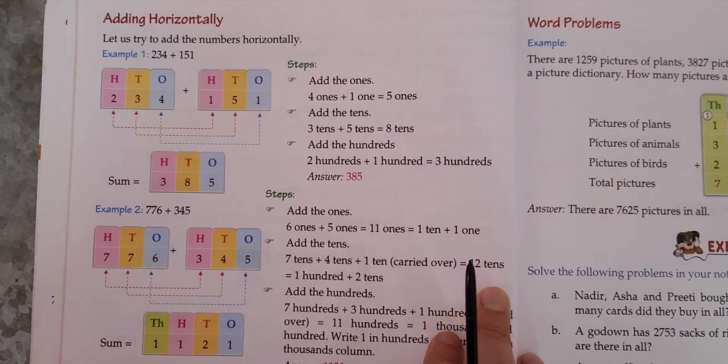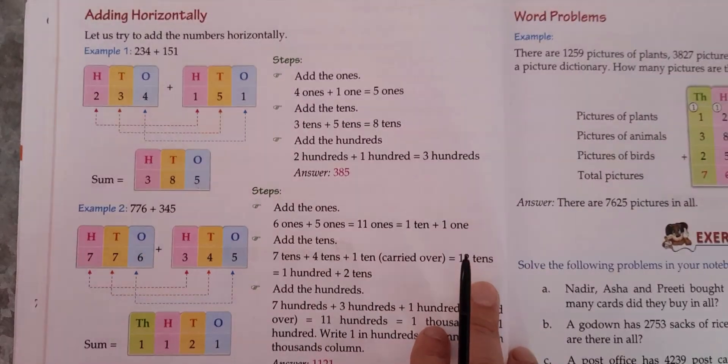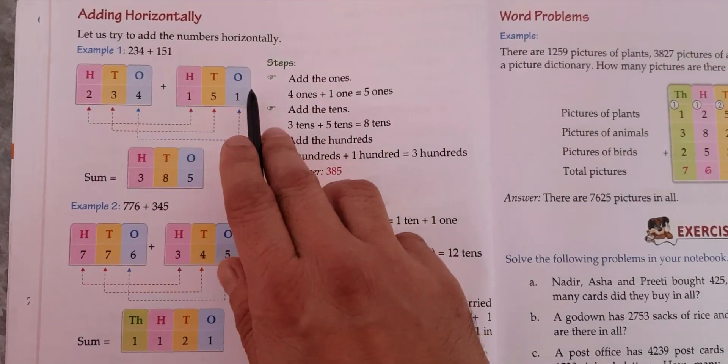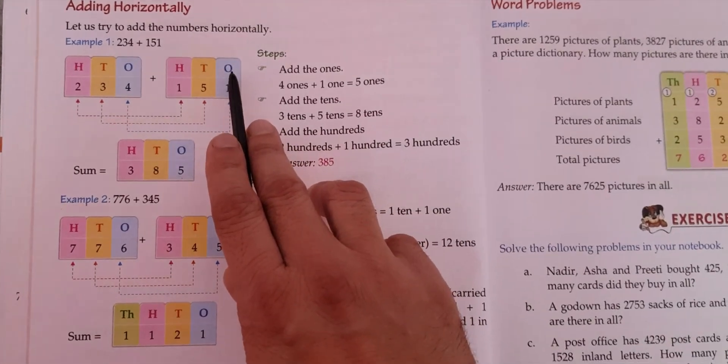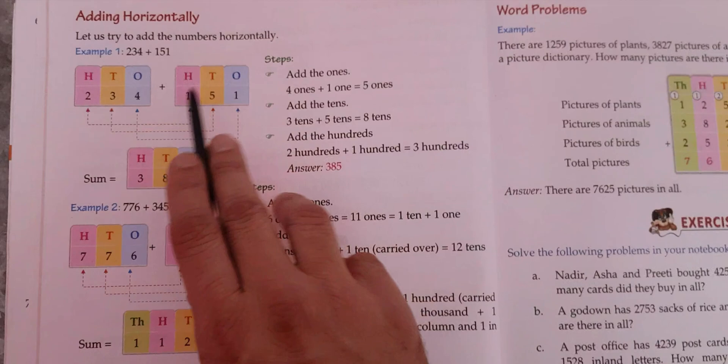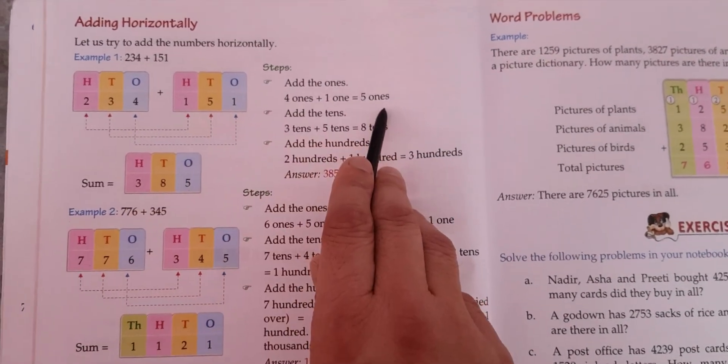Good morning students. Today we are going to learn how to add horizontally. In order to learn how to add horizontally, we must know the places very well, as I mentioned in every topic. So in this, what we do is we first add the ones places. So directly, four ones plus one one gives you five ones.